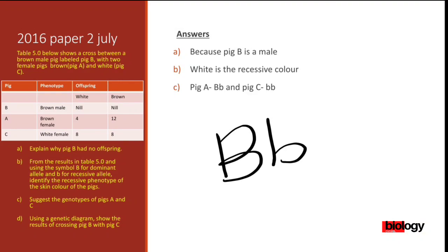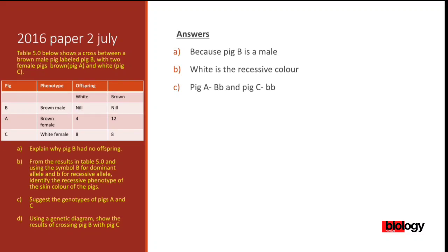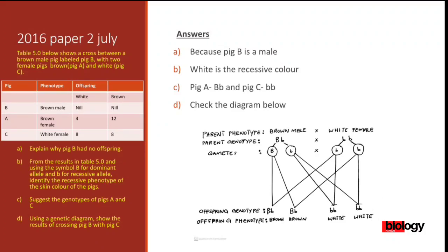Now for the genetic diagram crossing pig B with pig C. When drawing a genetic diagram, you first write the parent phenotype: brown male crossing with white female. That is what we see on the outside. After the parent phenotype, you write the parent genotype: capital B small b for the brown male, and small b small b for the white female.